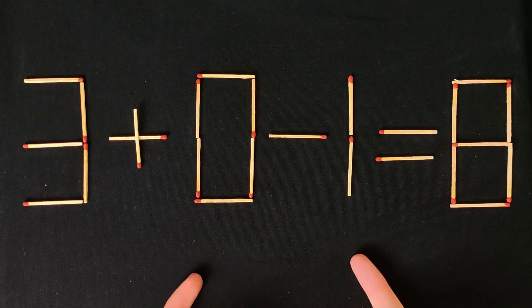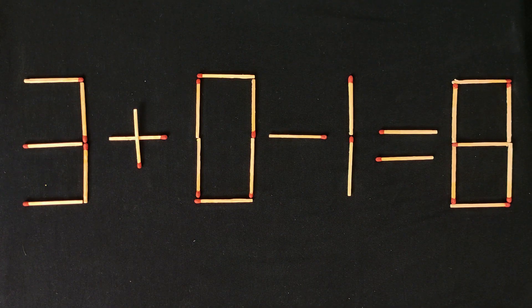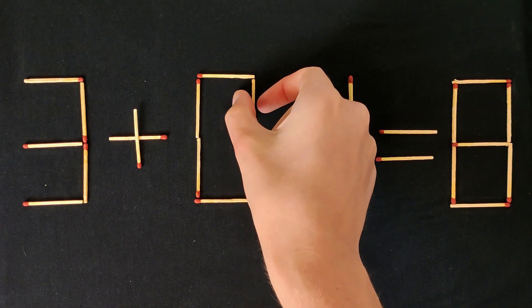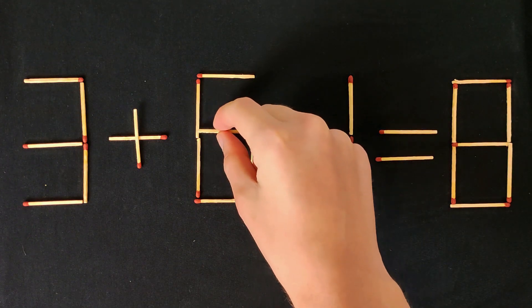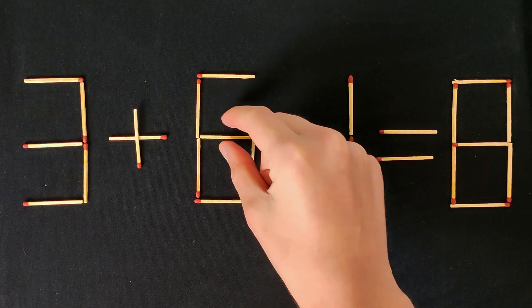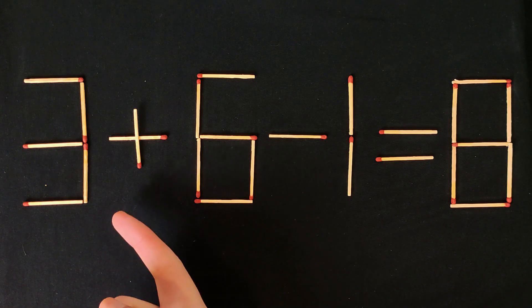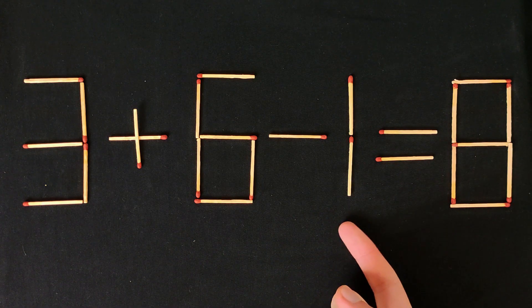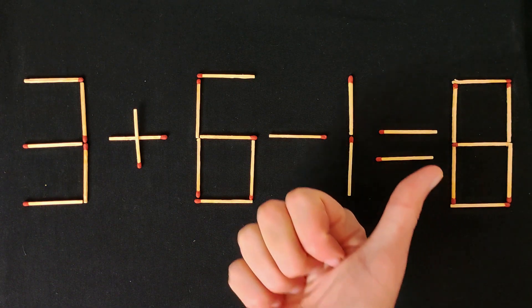And now I'll show you how it's solved. You need to move this match. Yes, we need to move it. Here, perfect. And now 3 plus 6 minus 1 equals 8. Correct.